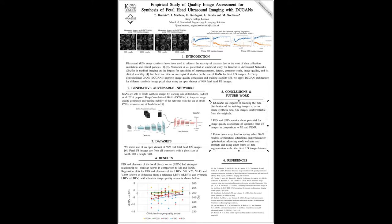As you can see in section 2, we made use of the DCCAN architecture proposed by Radford et al. in 2016, and we made use of a dataset of 999 real fetal-Hell Ultrason images. These are from all trimesters and the pixel size of the images are 800 times 540 pixels.